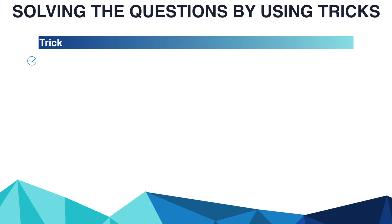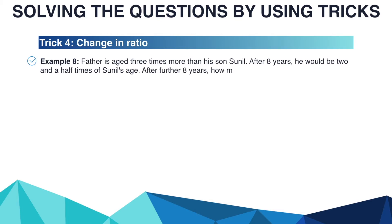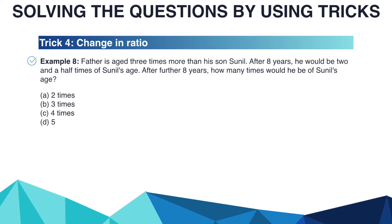The next trick is 'change in ratio.' Consider this example: father is aged 3 times more than his son Sunil. After 8 years, he would be 2 and a half times Sunil's age. After a further 8 years, how many times would he be of Sunil's age? Options are A: 2 times, B: 3 times, C: 4 times, D: 5 times. Indicating F for father and S for Sunil, the ratio F to S is 3 to 1.